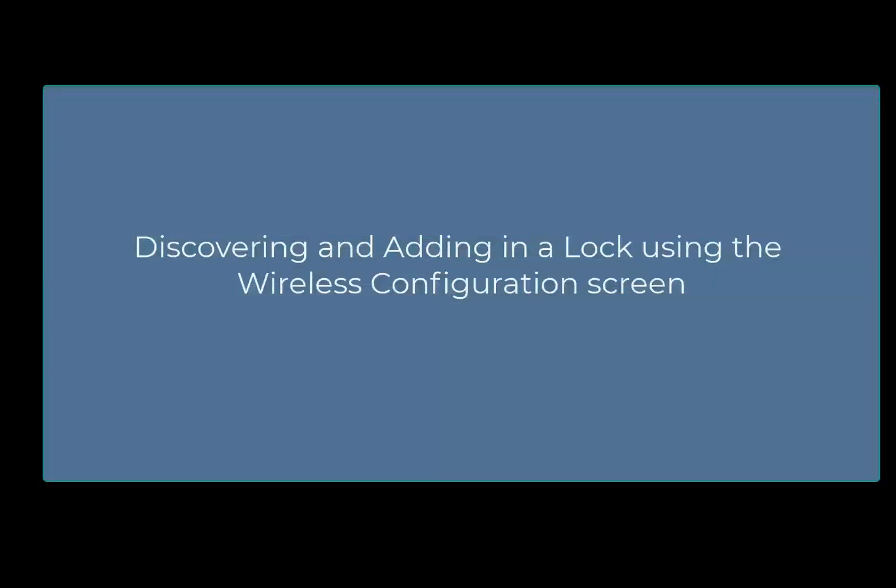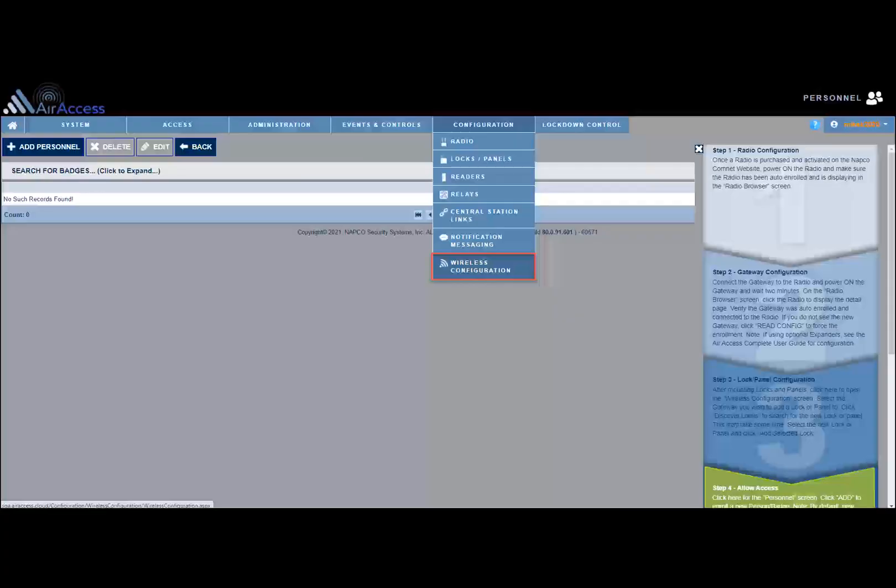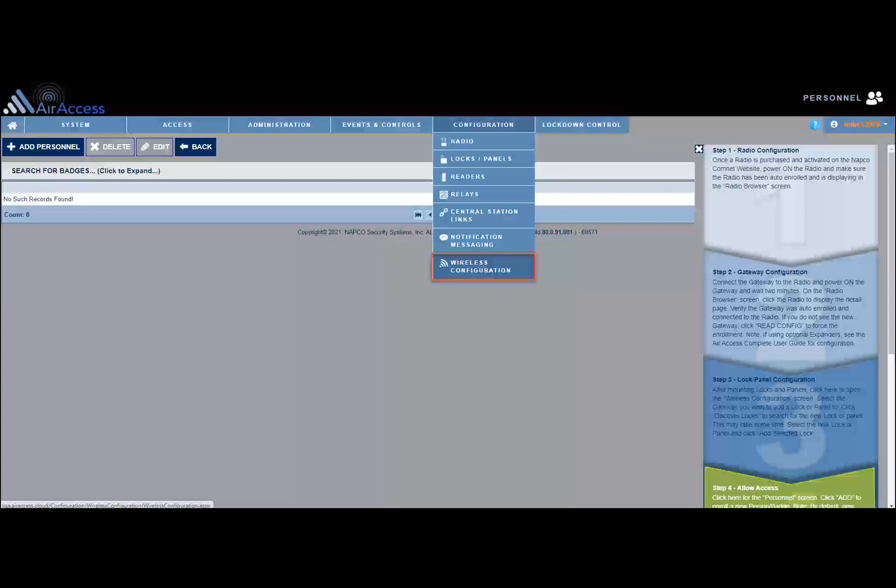Hello and welcome to the AirAccess technical videos. In this video we will explain in detail the AirAccess wireless configuration screen. The wireless configuration screen is used to discover and add in locks, net panels and expanders. As previously mentioned, the AirAccess radios and gateways are auto enrolled into the AirAccess software and do not require you to discover and add them in. To open the wireless configuration screen, click Configuration on the main menu and click Wireless Configuration.